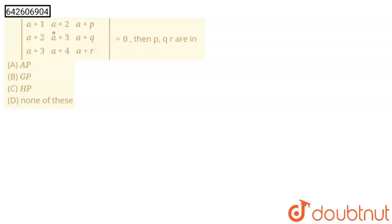Hello student, here the question is: if the determinant value of this is equals to zero, then p, q, r are in... and these are our four options. We have to say which of the following option is correct. So let's solve this.